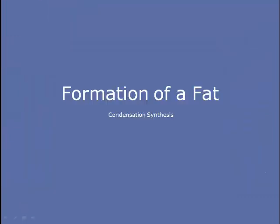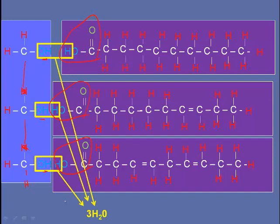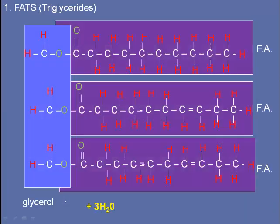Let's take a look at how fats form — and it's by condensation synthesis. Here we have glycerol and three fatty acids. You can identify glycerol because of the hydroxyl (OH) groups that make it an alcohol. The fatty acids are identifiable by their carboxyl groups. Where the loss of hydrogen and oxygen occurs is at the locations where the hydroxyl and carboxyl groups join, forming three molecules of water as three bonds form. We now have glycerol joined to three fatty acids, producing three water molecules in the process.